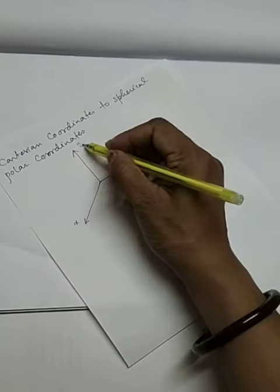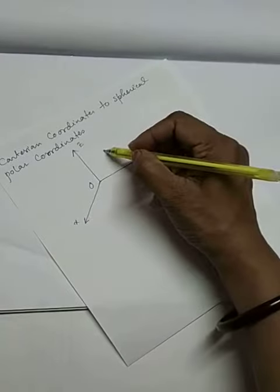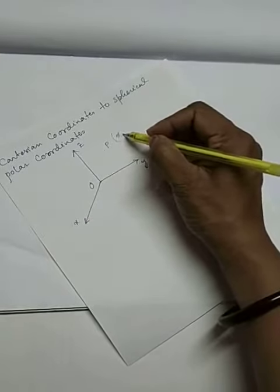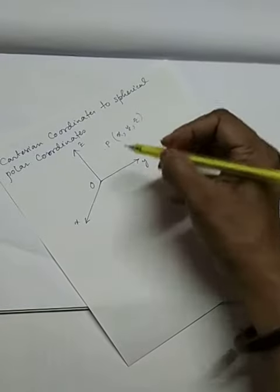X, Y, Z axis. O is the origin. P is a point. The Cartesian coordinates are X, Y, Z.